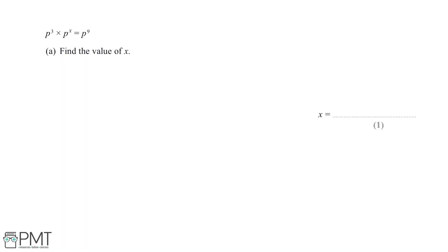P to the power of 3 multiplied by P to the power of x equals P to the power of 9. Find the value of x. For this question we need to know the algebraic principle that something to the power of x multiplied by the same thing to the power of y will be equal to that number to the power of x plus y.